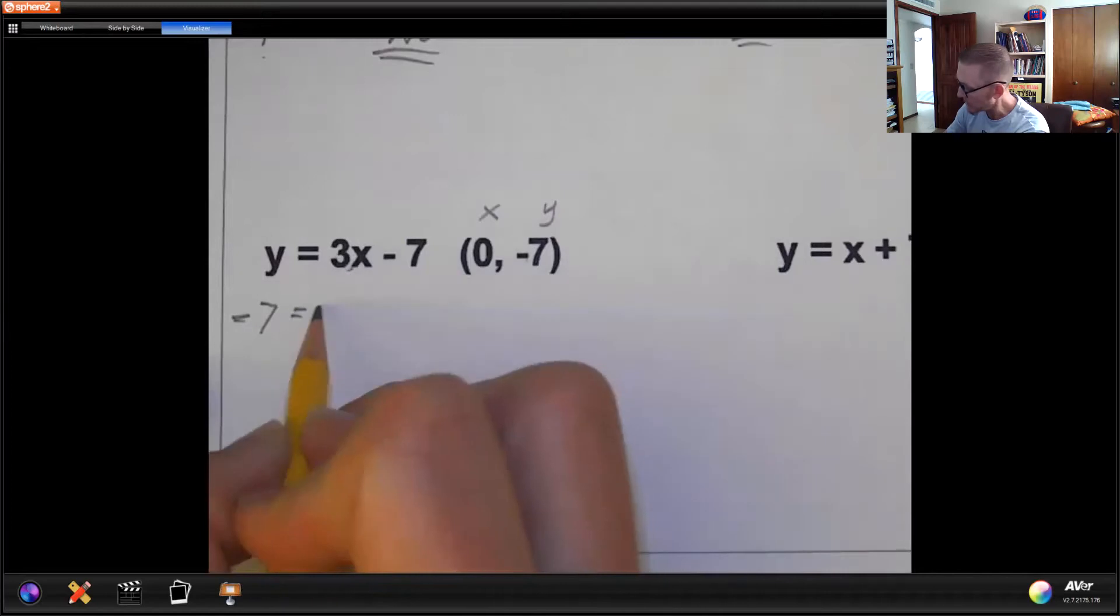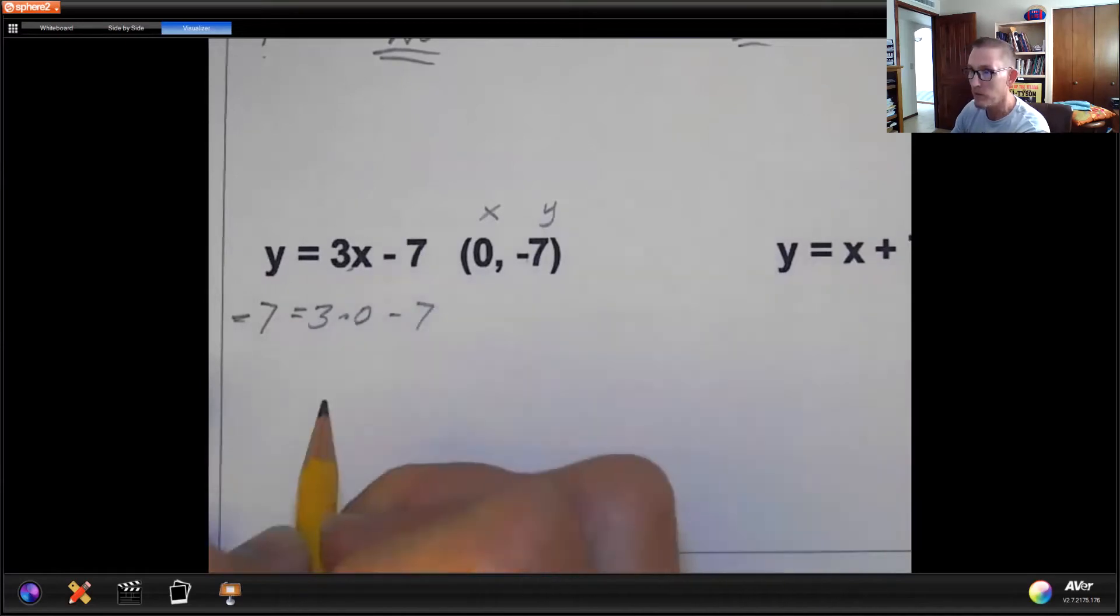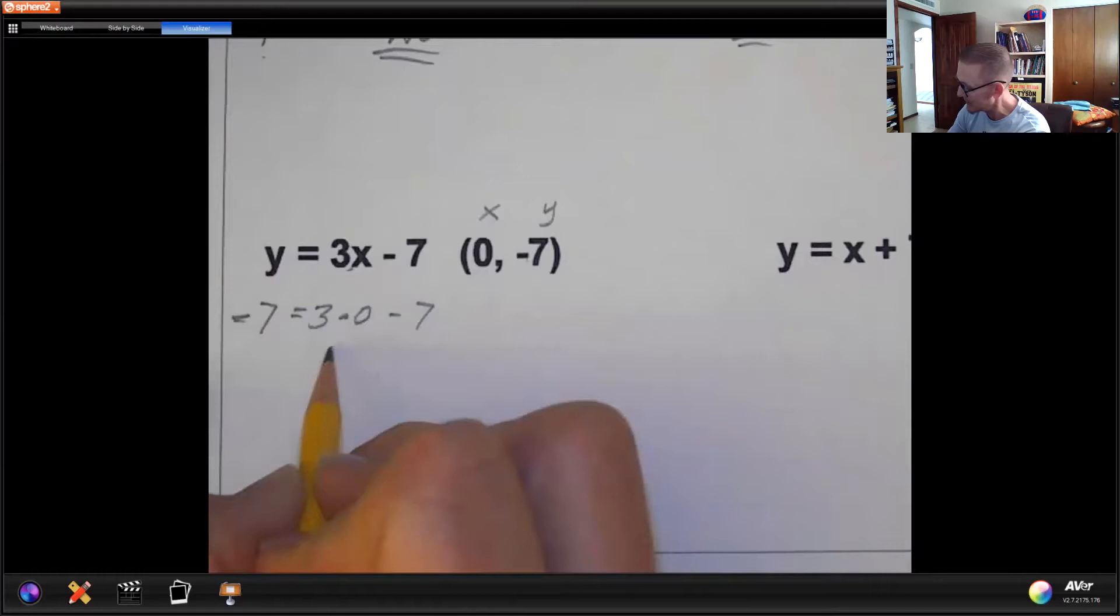Equals 3 times x, which means 3 times 0 minus 7. Well, let's do 3 times 0. 3 times 0 is 0 minus 7.